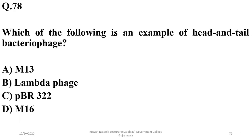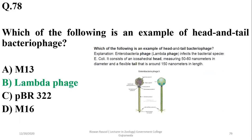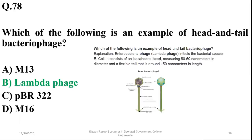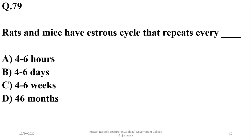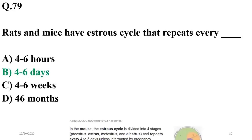Question 78: An example of a head-and-tail bacteriophage — the right option is B. Question 79: Rats and mice have an estrous cycle that repeats every 4 to 5 days (or 4 to 6 days), so B is the right option.